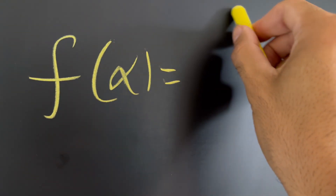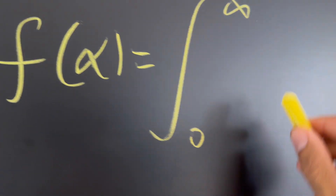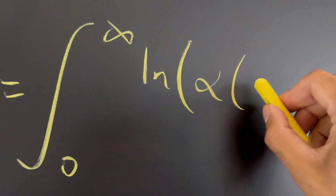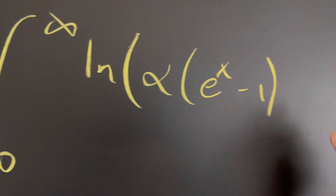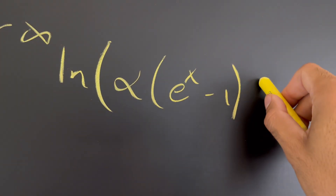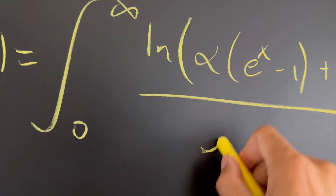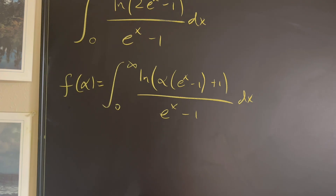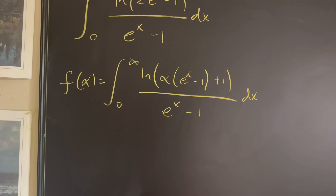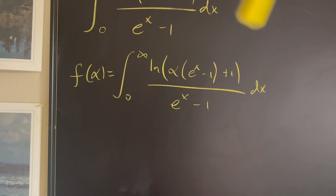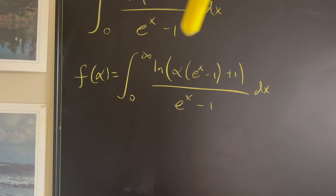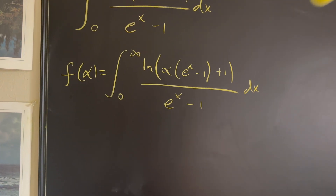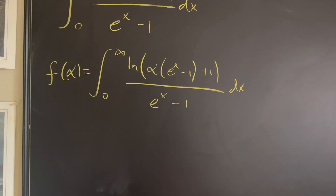We have f(α) equal to the integral from zero to infinity of the natural log of α times e^x minus one, plus one, all over e^x minus one, with respect to x. I created this new function f(α), where alpha is my new variable nestled inside the natural log, and you're going to see why I did that in a second.